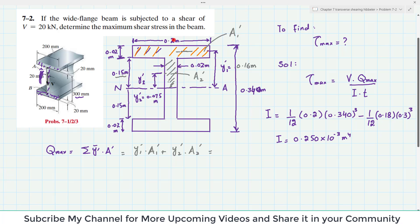A1 is 0.2 multiplied by 0.02. And A2 dash is this thickness which is 0.02 and height is 0.075. So I will write it over here. Y1 dash which is 0.16.